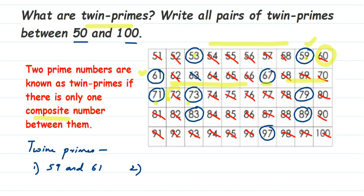Between 71 and 73 there is exactly one composite number, so 71 and 73 are twin primes. Between 61 and 67, 67 and 71, 73 and 79, 79 and 83, 83 and 89, and 89 onwards, there are many composite numbers in each case. So we have only two pairs of twin primes: 59 & 61, and 71 & 73. I hope this is clear — thank you for watching!